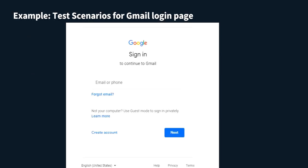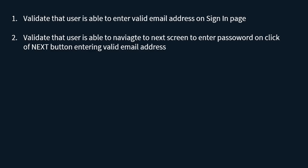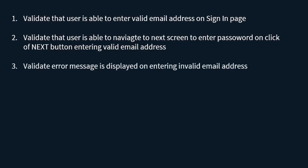Let's see an example. I have taken the Gmail login page, which basically consists of a text field that accepts either an email or phone number. You can also perform a forgot email action and see what happens on click of the next button. From a test scenario perspective: validate that the user is able to enter a valid email address on the sign-in page; validate that the user is able to navigate to the next screen asking for a password on click of next by entering a valid email; validate that an error message is displayed on entering an invalid email address.